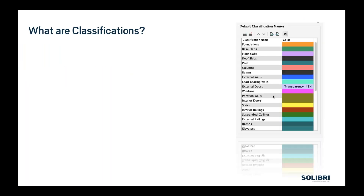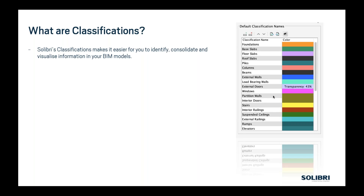Today: classifications. Classifications are there to help you identify, to consolidate information, to visualize all of the data that you have within your models. When we configure a classification, you can either drive that through manually working in this Solibri environment to classify things, or you can import a list based on naming conventions, based on the way in which you're building this criteria.